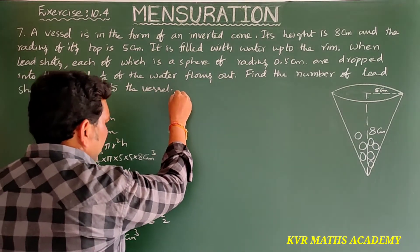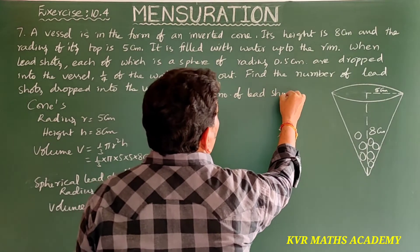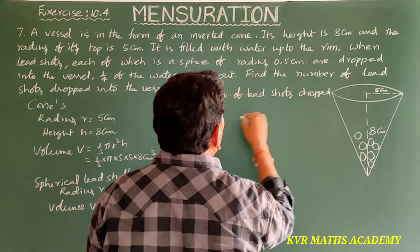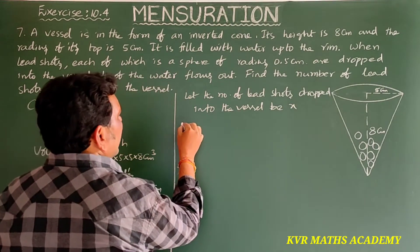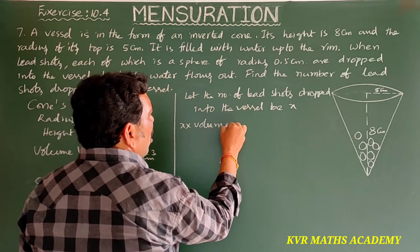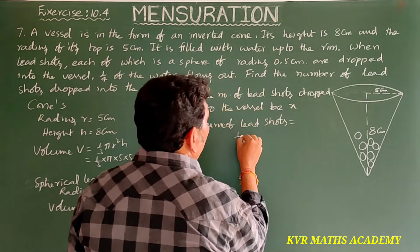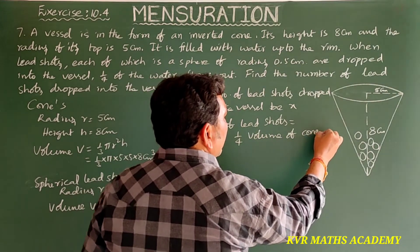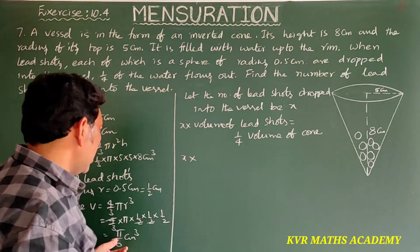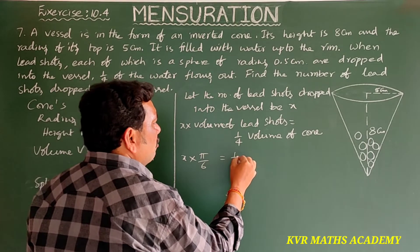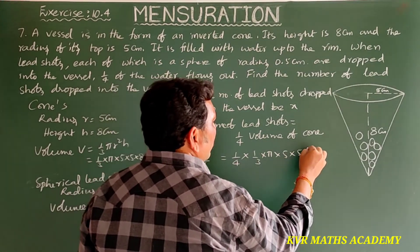Let the number of lead shots dropped into the vessel be x. So x × volume of lead shot = 1/4 × volume of cone. That gives x × π/6 = 1/4 × 1/3 × π × 5 × 5 × 8.